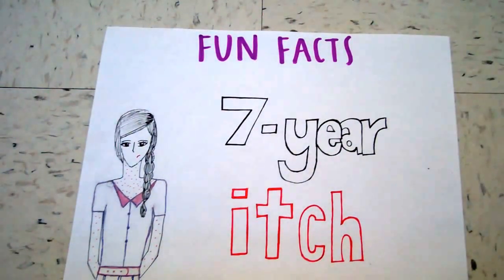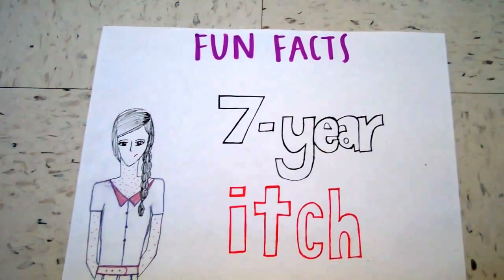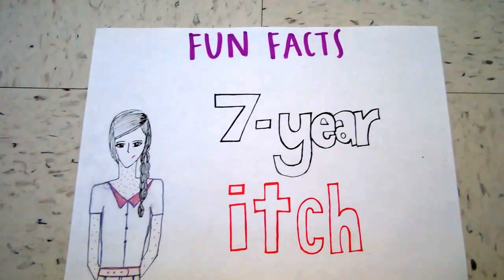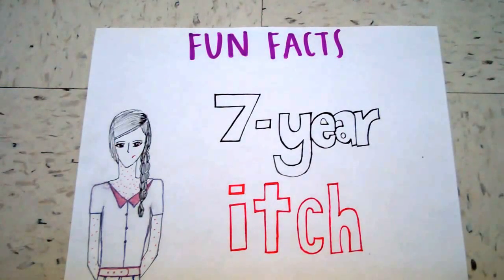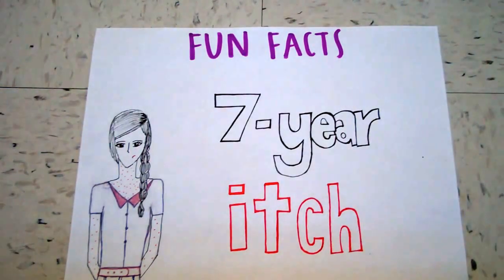Fun facts. There is little evidence of scabies infection for the first month the first time you get scabies. A more severe form of scabies is called Norwegian scabies, and it is more common among people with low immune systems. Scabies is also known as the seven year itch. Complications during the time you have scabies are caused by a secondary bacterial infection from scratching.